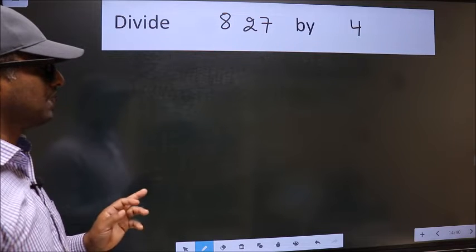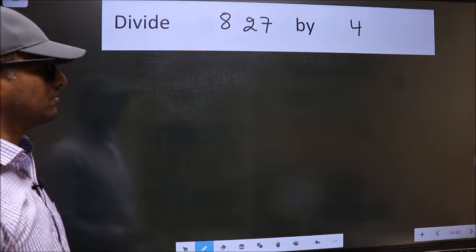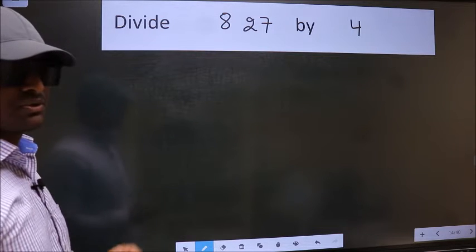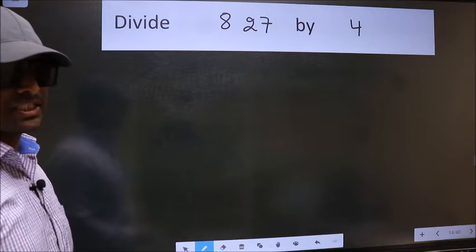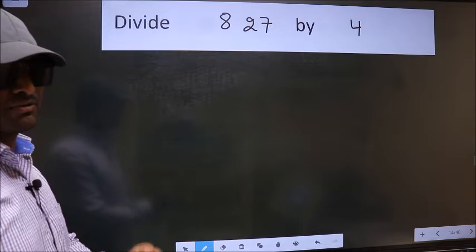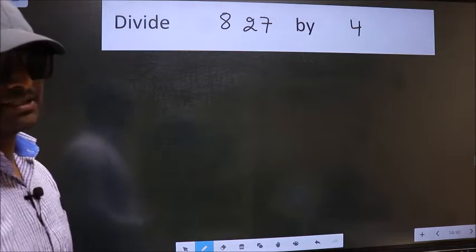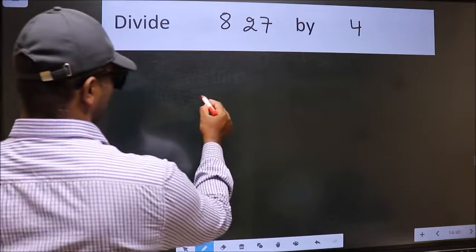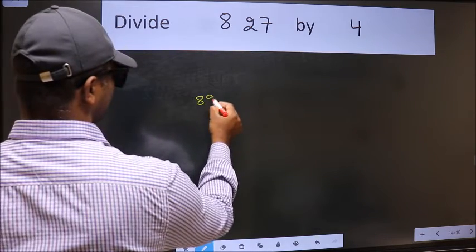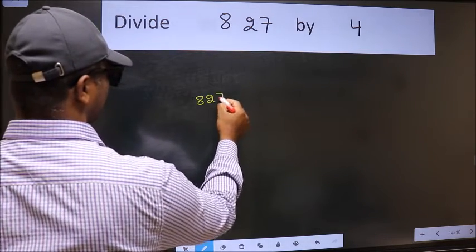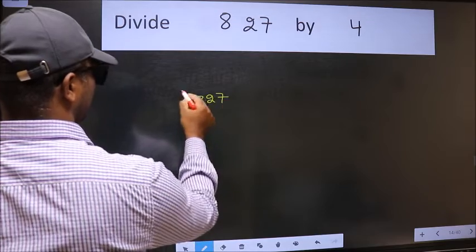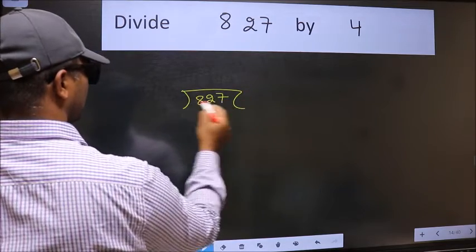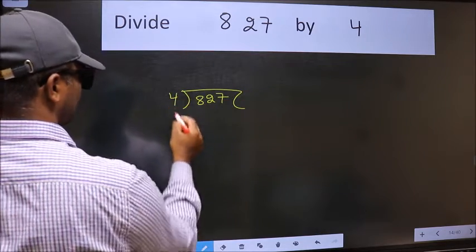Divide 827 by 4. To do this division, we should frame it in this way: 827 here and 4 here.